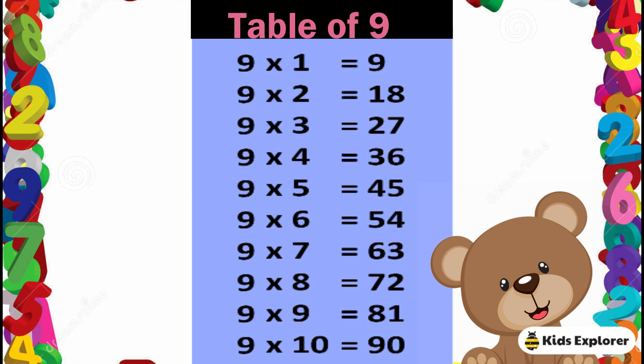Table of 9. 9 1's are 9, 9 2's are 18, 9 3's are 27, 9 4's are 36, 9 5's are 45, 9 6's are 54, 9 7's are 63, 9 8's are 72, 9 9's are 81, 9 10's are 90.